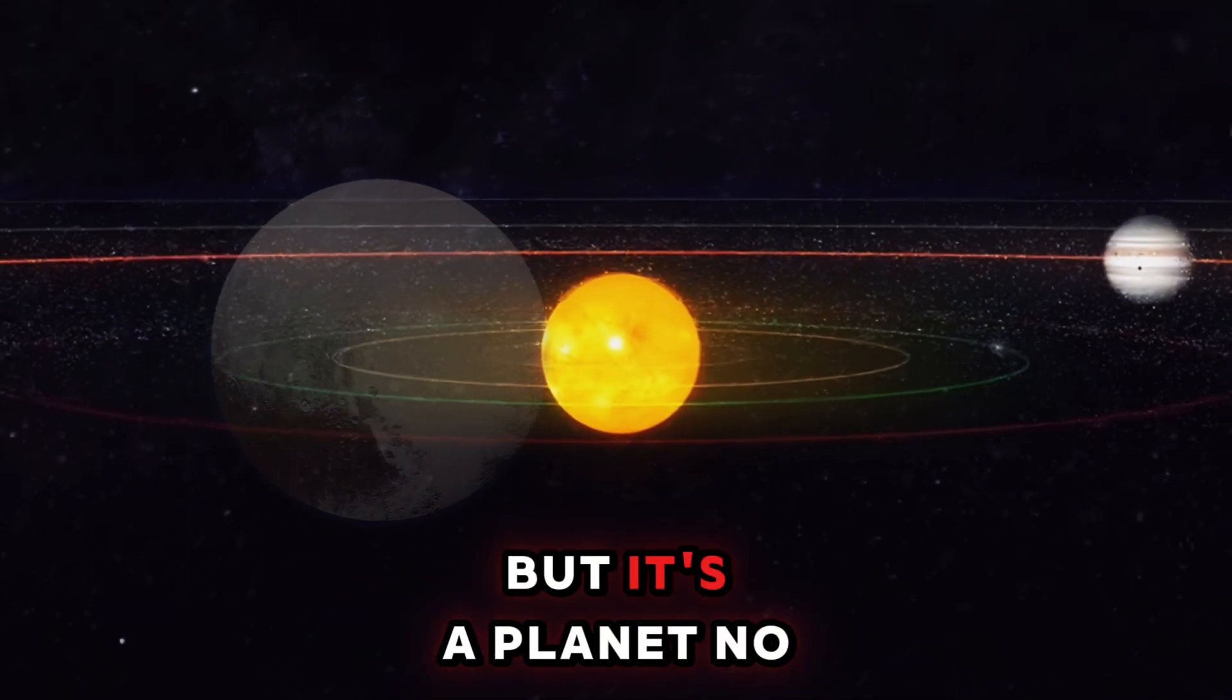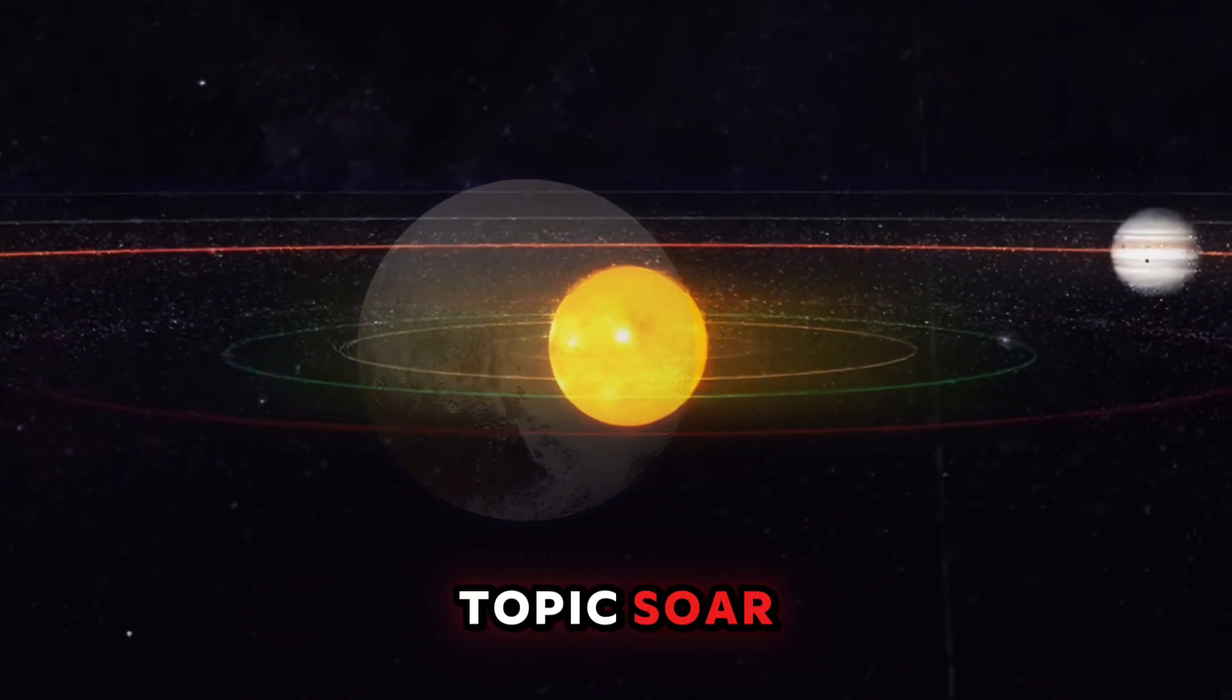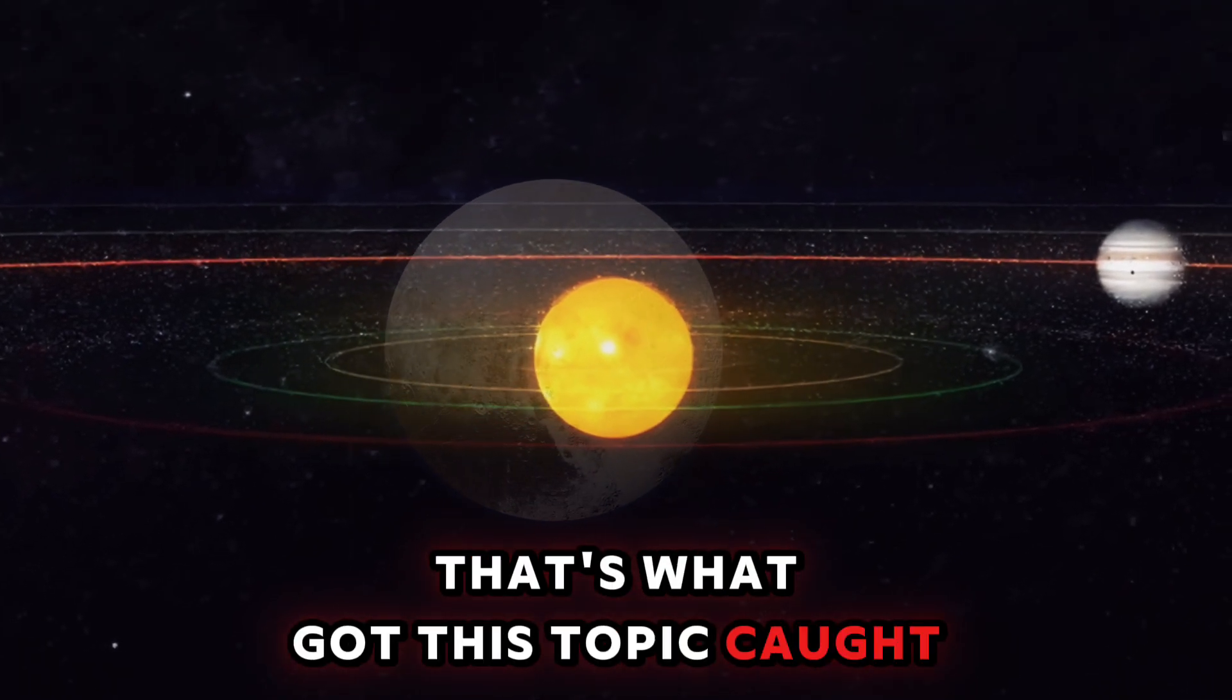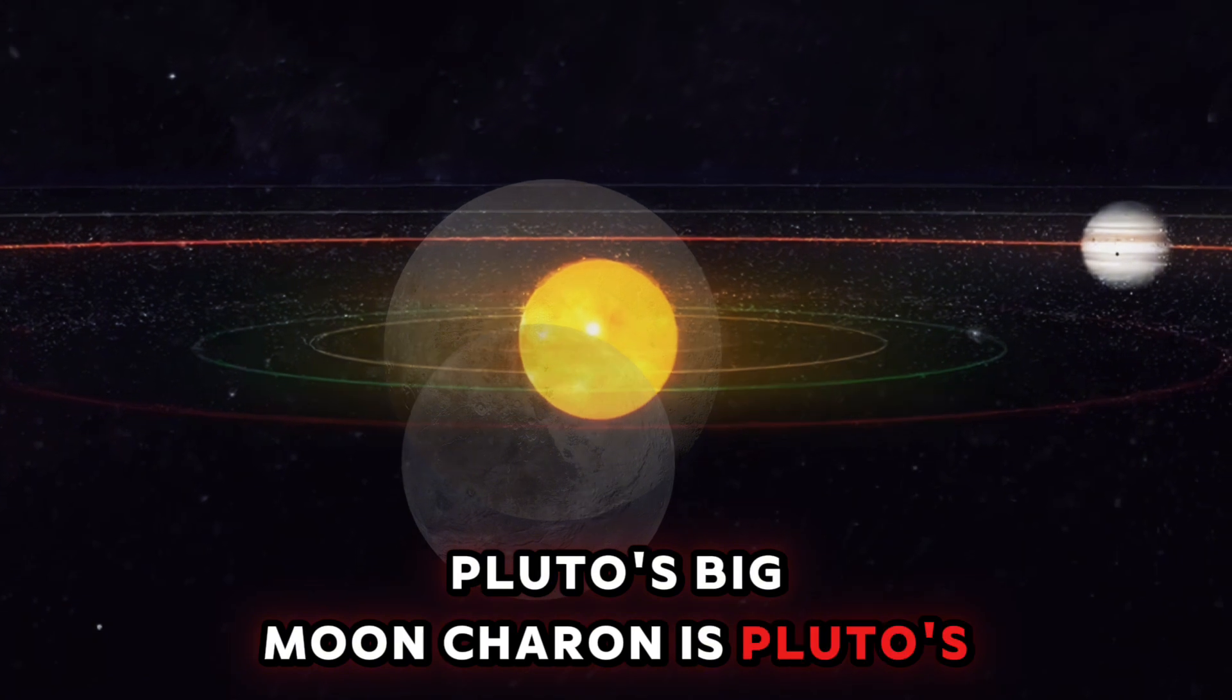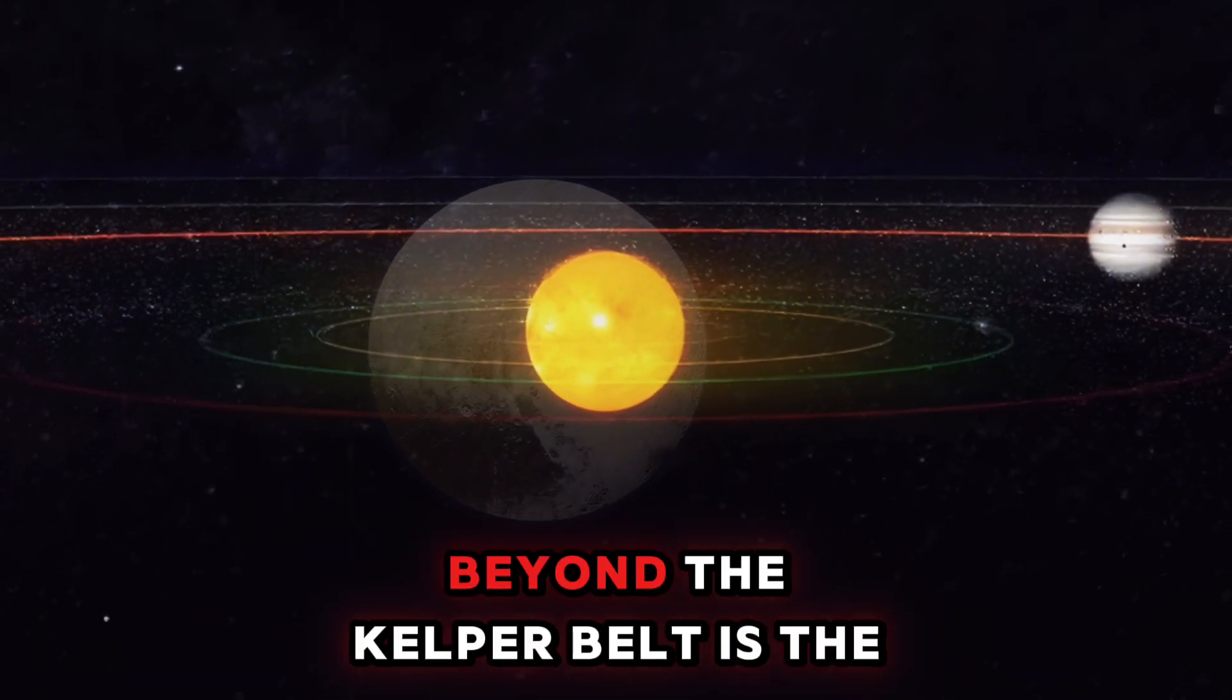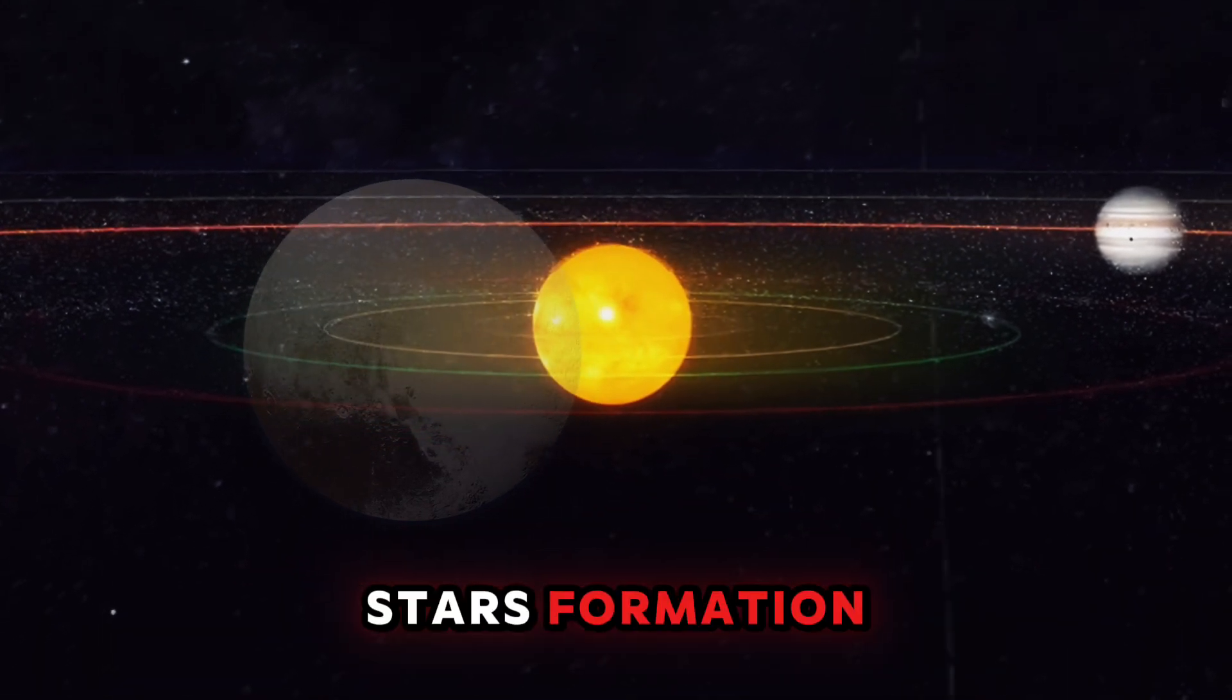The ninth planet was Pluto, but it's a planet no more because it's too small—it's a dwarf planet, but this topic's sore. The planets orbit close to a plane, but Pluto does not, and more dwarf planets were found—that's what got this topic hot. Pluto's big moon Charon is Pluto's little brother, so big that Pluto and Charon orbit one another. Beyond the Kuiper Belt is the Oort Cloud, and that's where debris from our star's formation can be found.